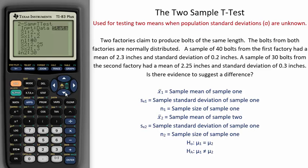A sample of 30 bolts from the second factory had a mean of 2.25 inches and a standard deviation of 0.3 inches. Here is the sample mean for factory two, the sample standard deviation for factory two, and the sample size for factory two.